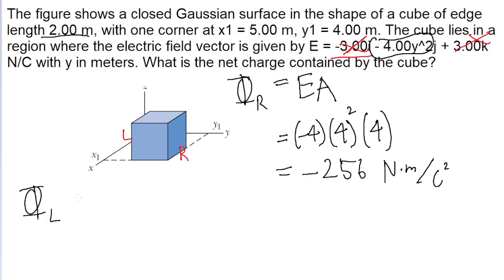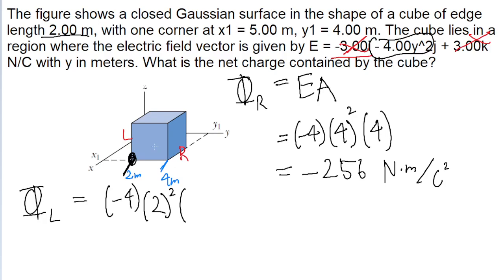Now let's find the electric flux through the left face. It's going to be the same formula — the electric field multiplied by the surface area. The electric field is again negative 4 times y squared, but this time the y value is different because the left face is at a different point on the y axis. Since the right face was at y equals 4 meters, and the edge length of the cube is 2 meters, the left face has to be 2 meters down from 4, so it's located at y equals 2 meters. So we have negative 4 times the square of 2 meters, then times the area, which has a magnitude of 4 meters squared.